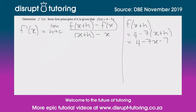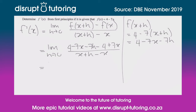Now let's plug that in. We're going to look for our limit as h approaches zero. f(x+h) is 4 minus 7x minus 7h, minus f(x) which is minus 4 plus 7x — remember you need to apply the distributive law — all over (x+h) minus x.